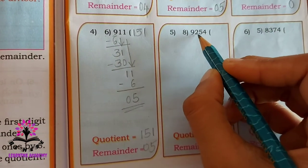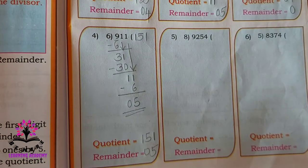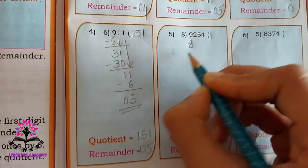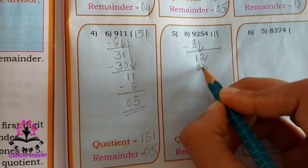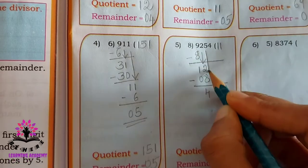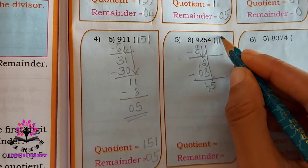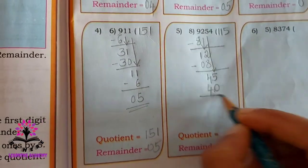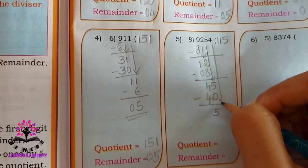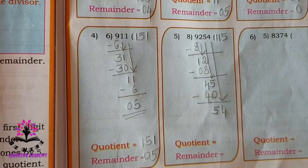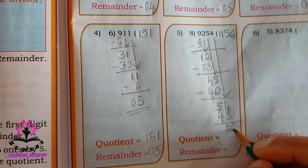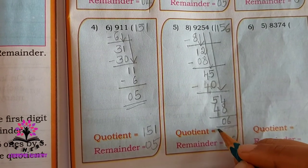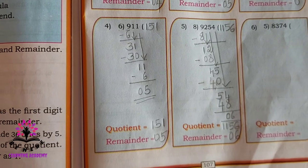See the next one: 9254 divided by 8. Eight — how much is nine? Eight ones are eight. Subtract — get 1. Bring 2 down: eight — how much is 12? Eight ones are eight. Subtract — 4 is the answer. Bring 5 down: eight — how much is 45? Eight fives are 40. Subtract — 5 remains. Bring 4 down: eight — how much is 54? Eight sixes are 48. Subtract — the remainder is 6, and the quotient is 1156. The remaining problems you have to solve by yourself.